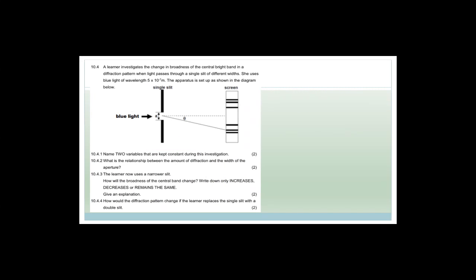A learner investigates the change in broadness of the central band in the diffraction pattern when light passes through a single slit of different widths. She uses blue light of a wavelength of 5 times 10 to the negative 7 meters. She's changing the width of the single slit and looking at the pattern on the screen.